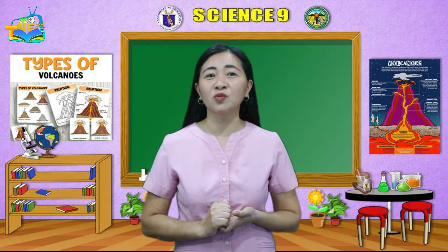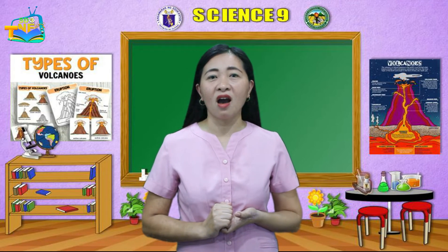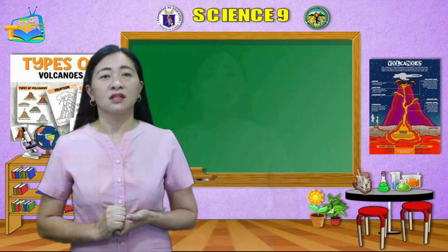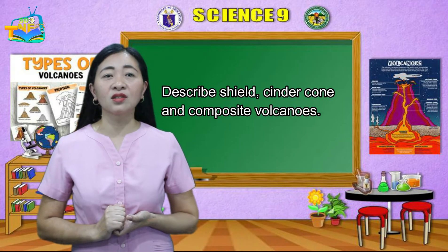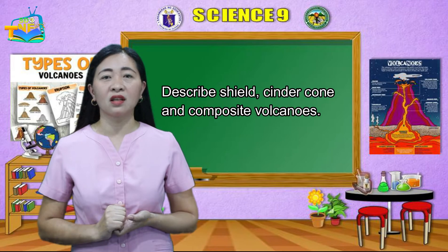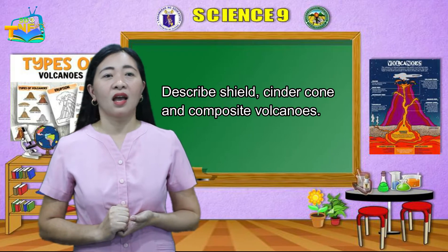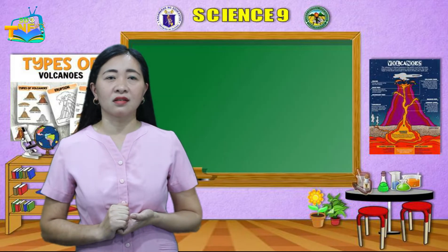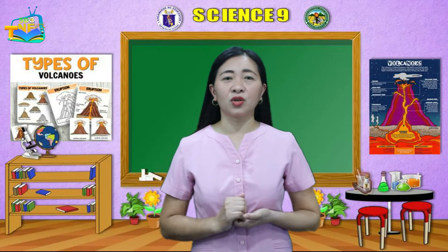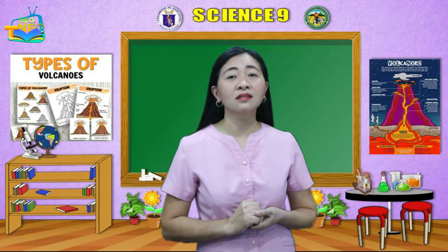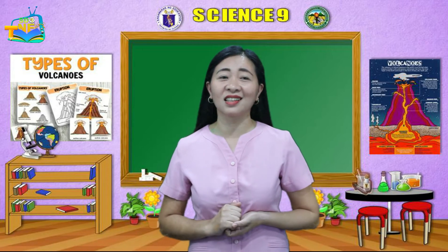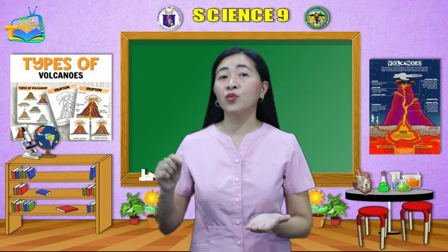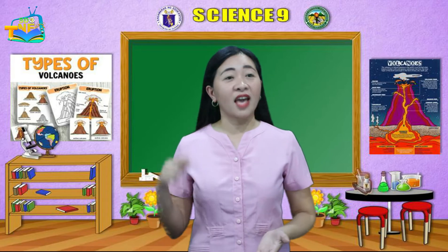The skills that you must acquire after this lesson are the following: describe shield, cinder cone, and composite volcanoes; and locate volcanoes using Google Earth. Be the best that you can be after exploring the amazing facts in this lesson. Now, get your notebook and pen ready. Let's start!